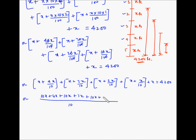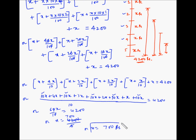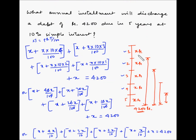Adding up the coefficients: 10 + 10 = 20, + 10 = 30, + 10 = 40, + 10 = 50; then 50 + 4 = 54, + 3 = 57, + 2 = 59, + 1 = 60. So 60X/10 = 4200, which gives 6X = 4200, therefore X = 4200/6.